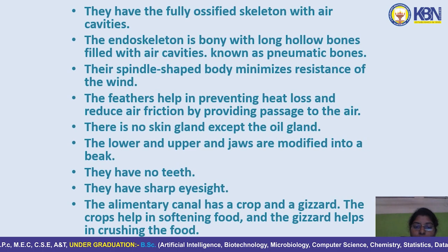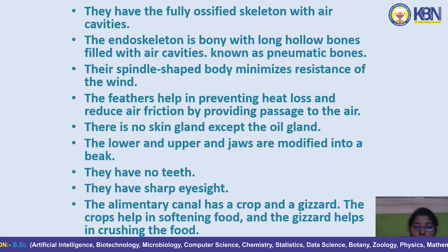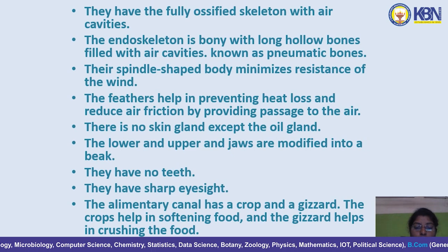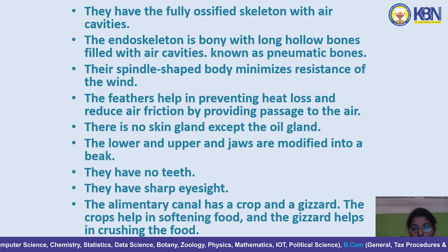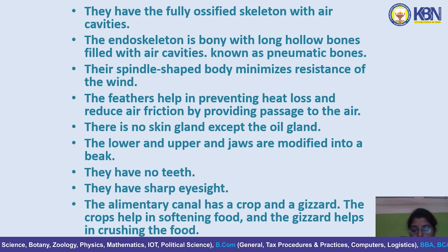There is no skin gland except the oil gland. The lower and upper jaws are modified into a beak; they have no teeth. They have sharp eyesight. The alimentary canal has a crop and a gizzard. The crop helps in softening food, and the gizzard helps in crushing the food.